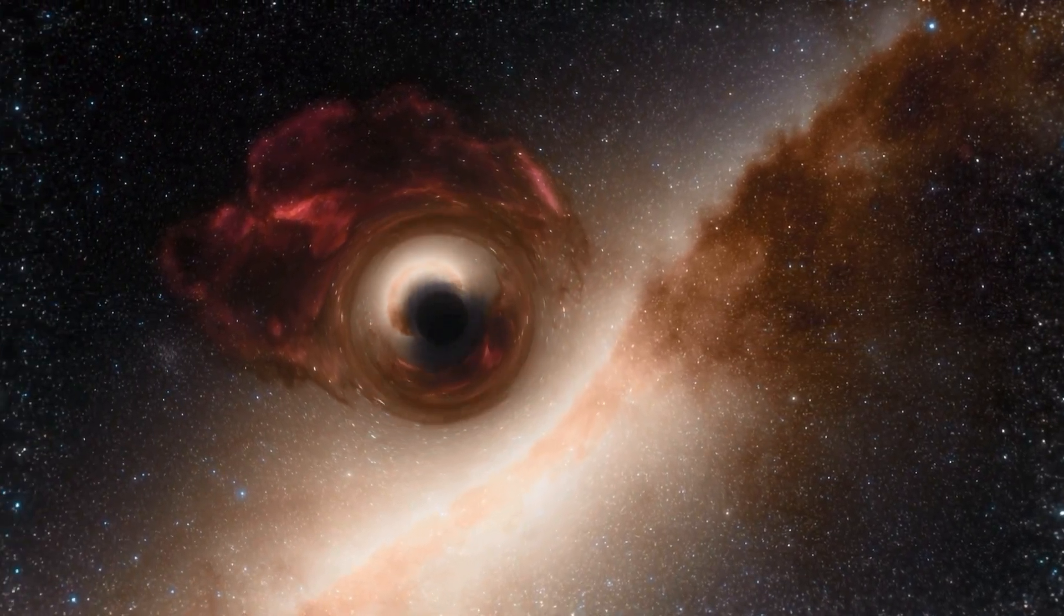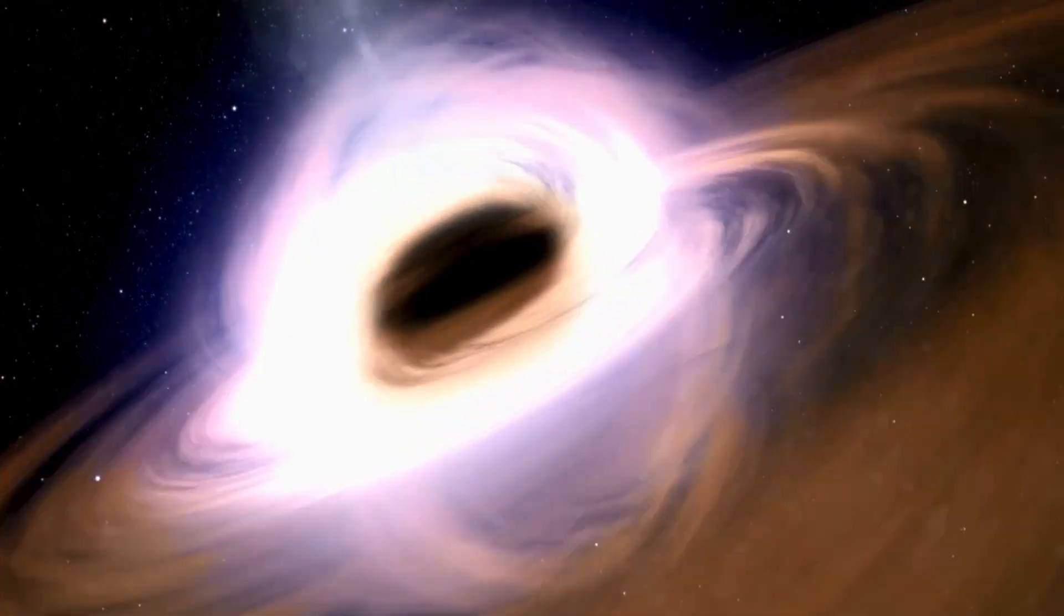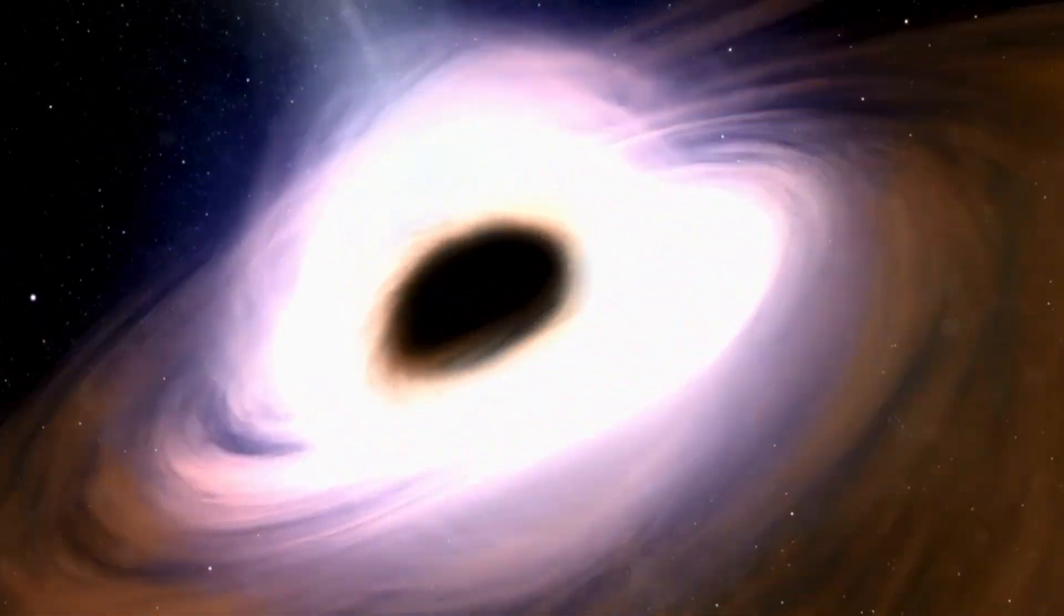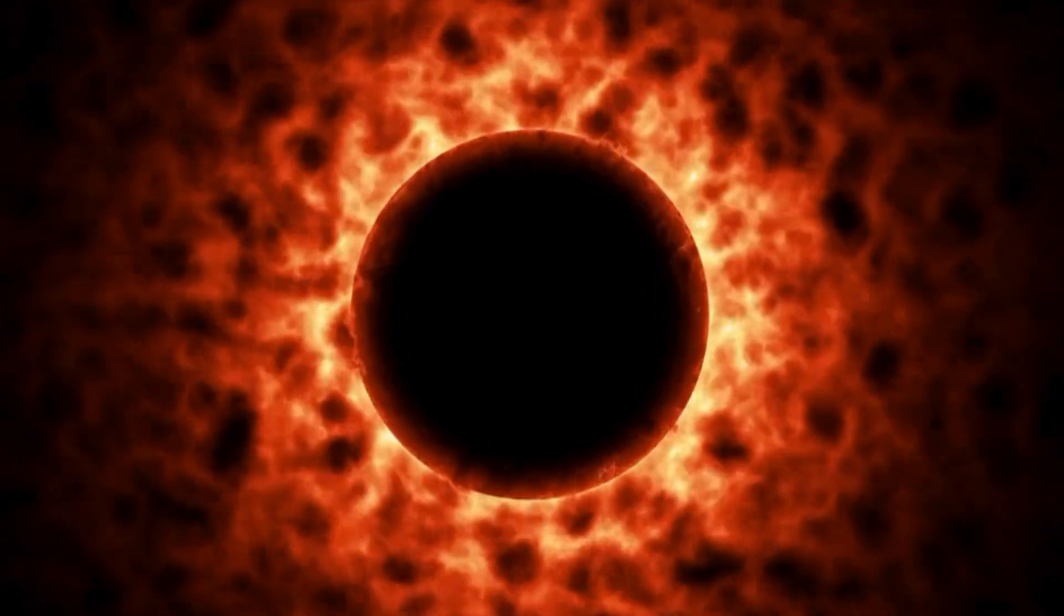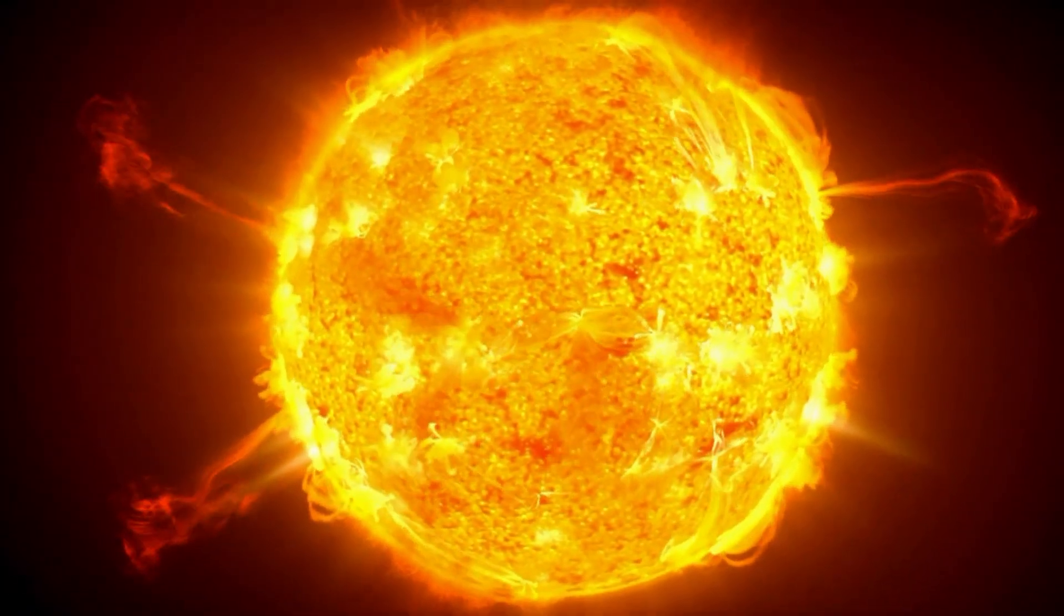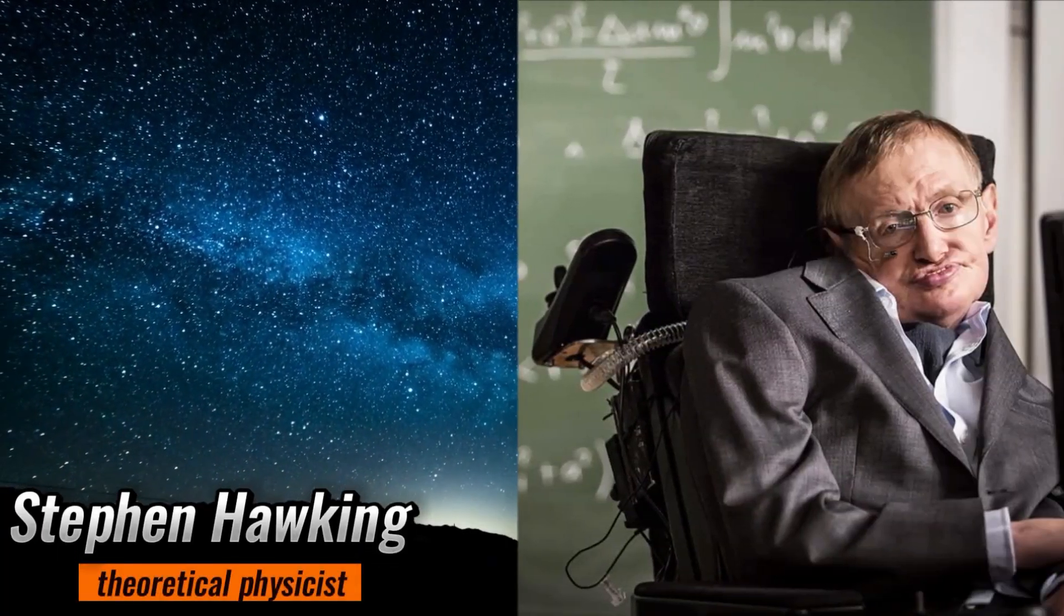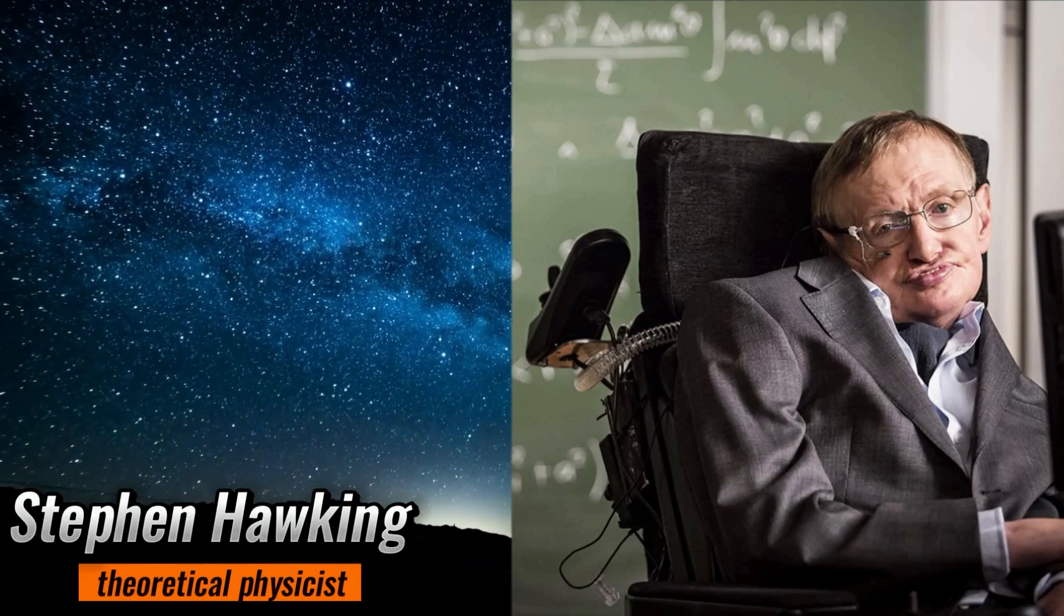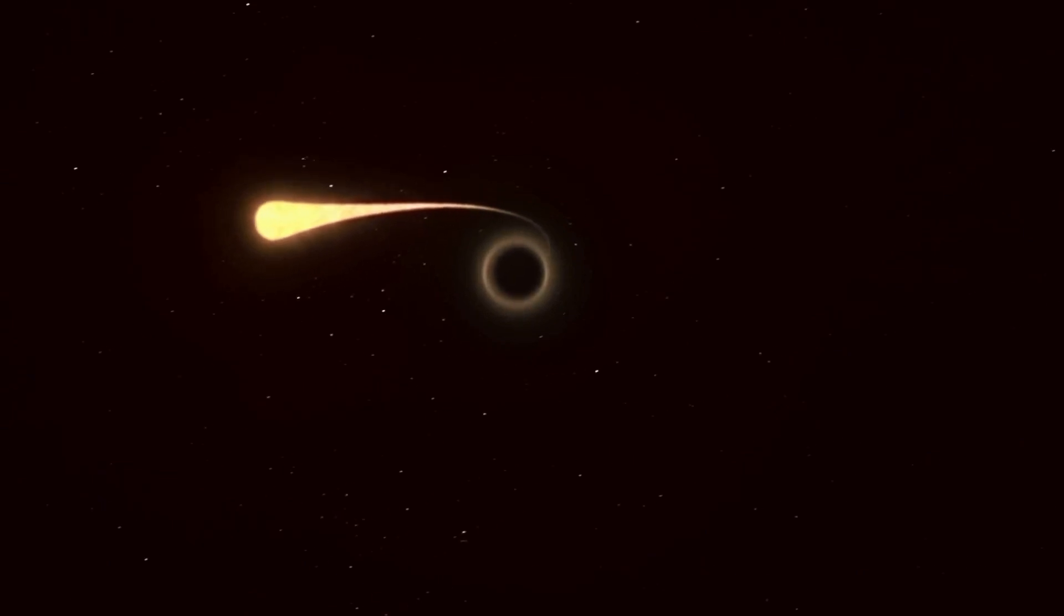Black holes, those enigmatic cosmic entities with an irresistible gravitational pull, are known for their ability to trap even light itself. But what happens when you introduce one into the core of a star? The answer lies in the fascinating realm of Hawking stars, named after the legendary physicist Stephen Hawking, who first proposed their existence in 1971.